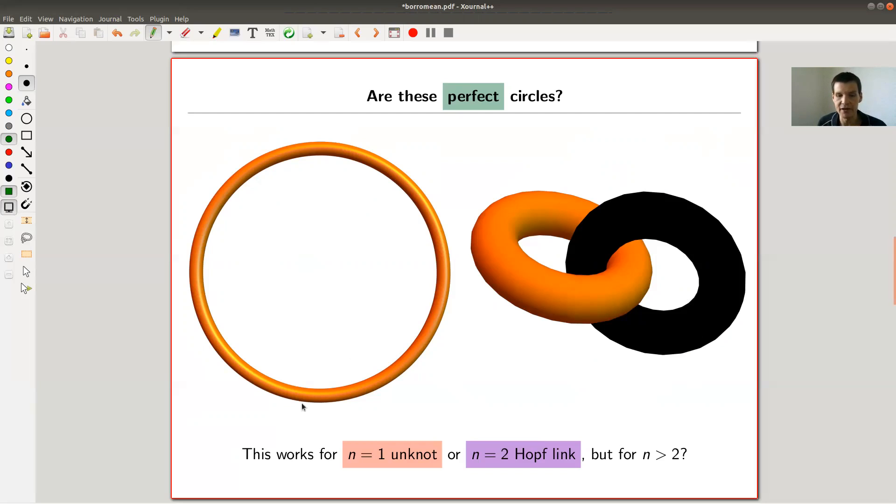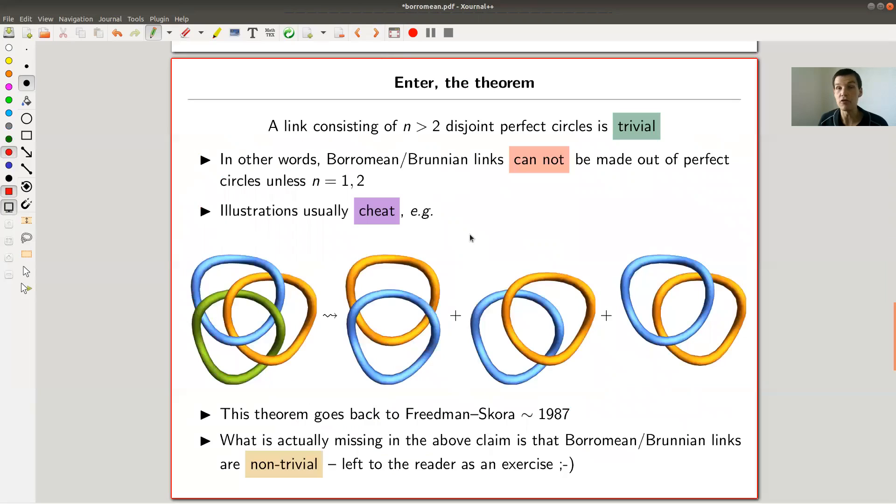You definitely can for n equals one. For n equals one, so n was the number of components, you just have one circle, it's not interlaced with anything. You can also do it for n equals two, this is a so-called Hopf link in a very nice donut demonstration. You definitely can interlace the Hopf link using two perfect circles, just take your fingers, you can do it with your fingers.